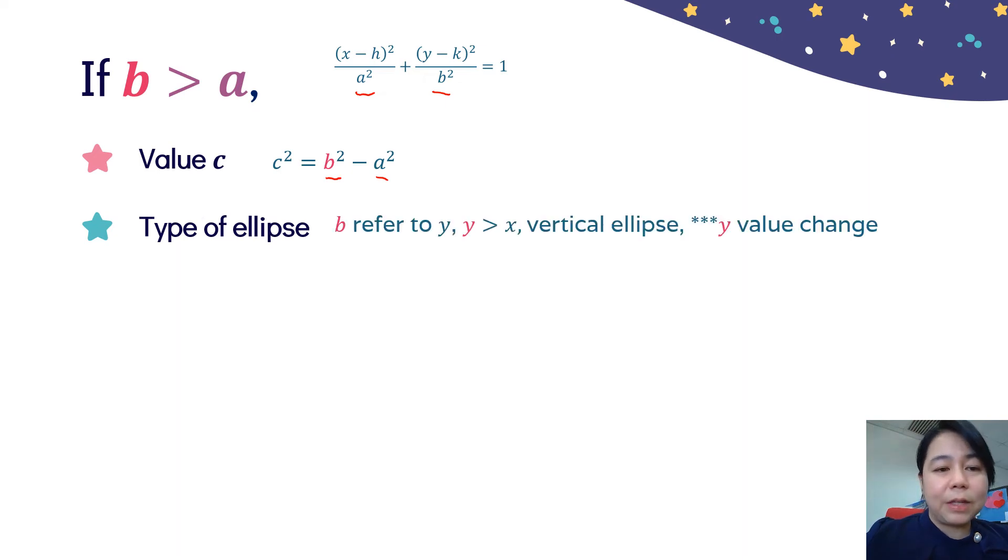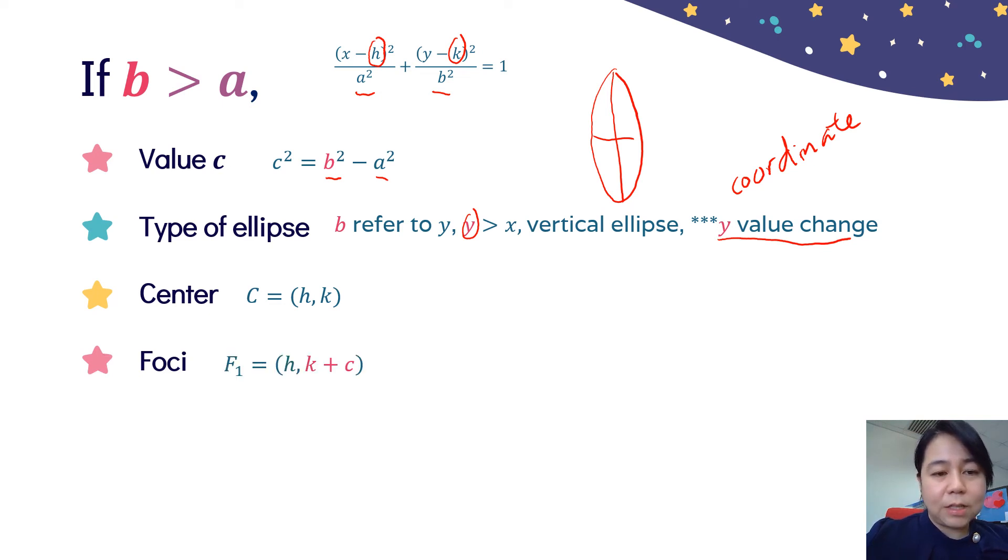To get the types of the ellipse, B refer to Y, Y greater than X, so we will get the vertical ellipse. Y values change, that means Y coordinate will change to find the foci and the vertex. For the center, we just need to get from the formula that is (h, k). For the foci, F₁ is equal to (h, k+c). The Y coordinate change. F₂ is (h, k-c).